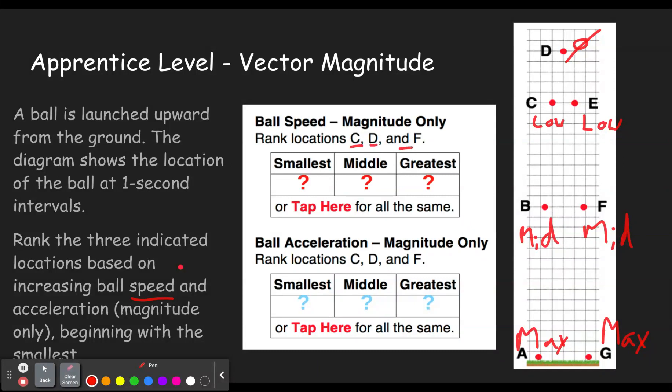So we just take a look here. In this case, we're looking at C, D, and F. So C is low, D is zero, and F is mid. So that means the smallest should be the one that's zero. The middle would be the one that's low. And the greatest would be the one that's mid, because we weren't given A or G as an option. Otherwise, those would be the greatest.